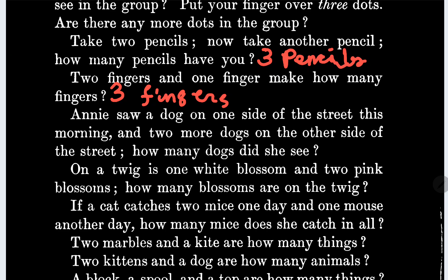Annie saw a dog on one side of the street this morning and two more dogs on the other side of the street. How many dogs did she see? She saw three dogs.